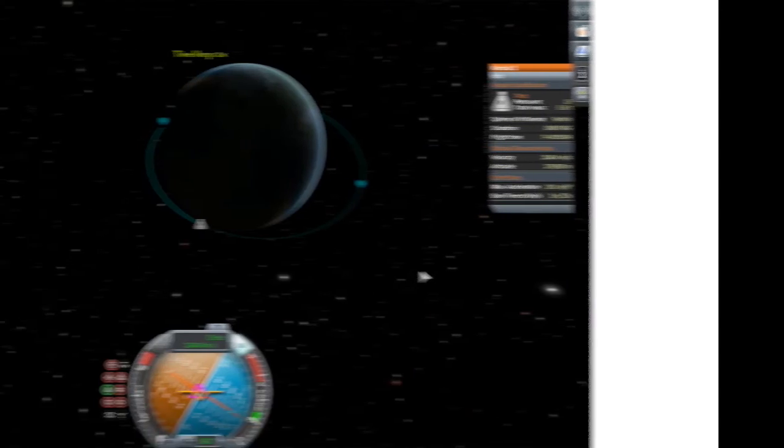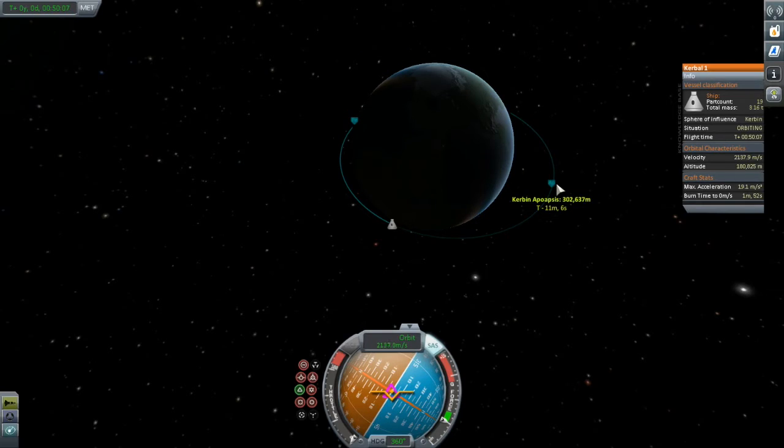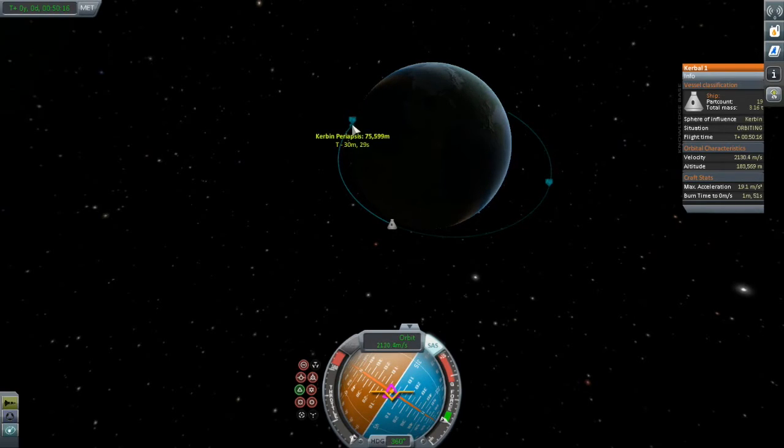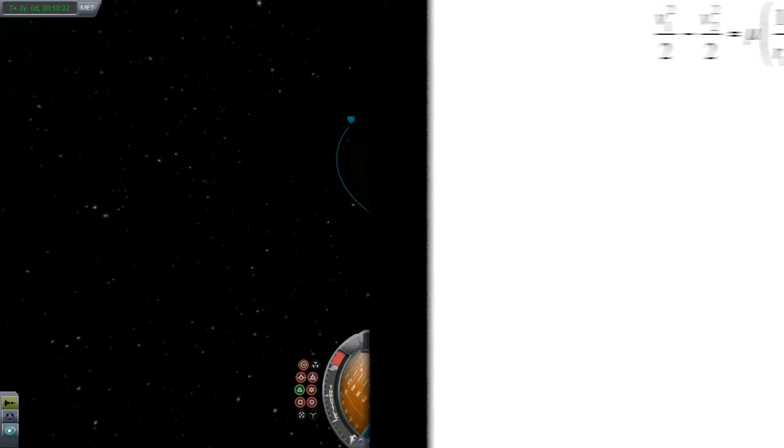This formula relates together the velocities and radii of two different points in any orbit. Now, let's think about our elliptical transfer orbit to get us from an altitude of 80 kilometers to 300 kilometers. Let's make periapsis position 1 and apoapsis position 2. This means r1 is 680,000 meters and r2 is 900,000 meters. What we want to determine is v1, our velocity at periapsis. This gives us the velocity we would need to get up to 300 kilometers. And if we knew our velocity before making the burn, we could just subtract to get the required delta V for the transfer orbit. There's just one problem. We don't know what v2 is.